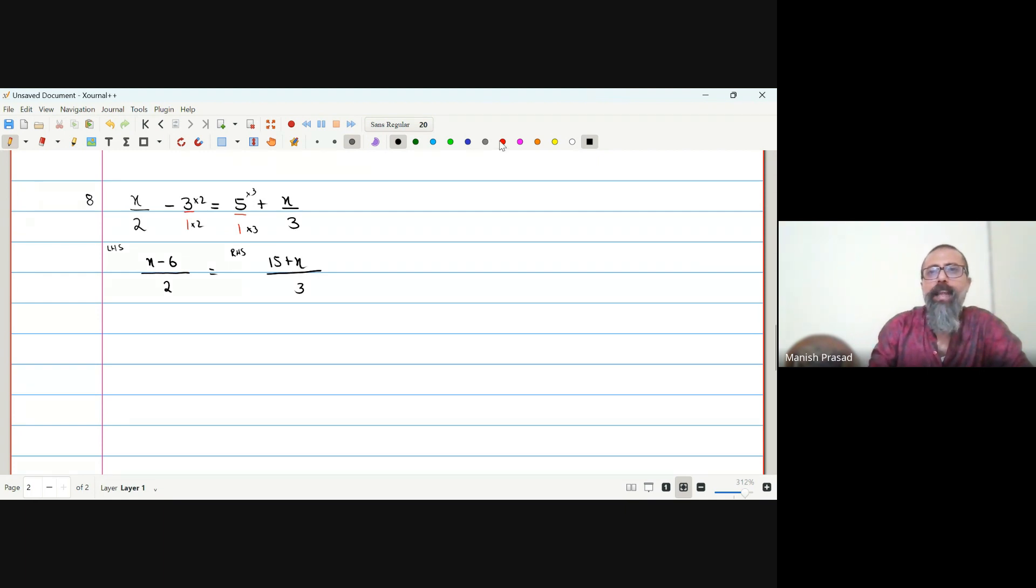Now, like the previous question, 2 is going to go this side. So, what is going to happen on the RHS? Multiplied. Yeah, 2 multiplied by 15 plus X.